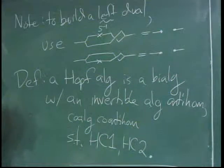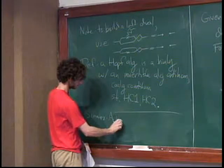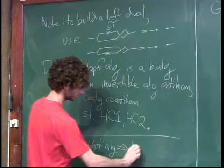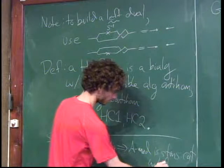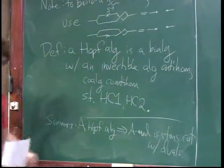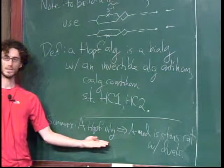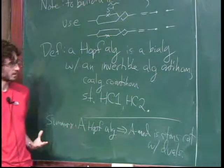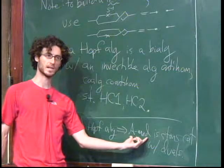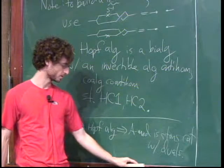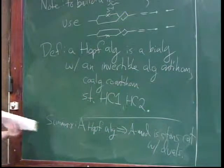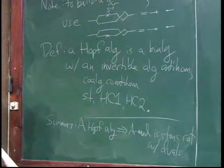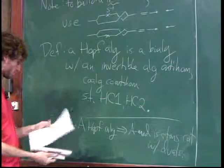To summarize: if A is a Hopf algebra, A-mod is a tensor category with both left and right duals — which is what we wanted. More generally, we're going to build Hopf algebras coming from quantum groups, whose representation categories are tensor categories and give us the start of the structure of a three-dimensional field theory. We'll put more structure yet on these Hopf algebras.